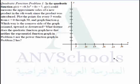Quadratic Function Problem 1: In the quadratic function Q of X is equal to negative 0.3 X squared plus 8X plus 7, Q of X could measure the approximate sales of a new product in the X week since the product was introduced. Plot the point for every 5 weeks from X equals 0 through 30 and graph function Q. Which way is the concave side of the graph oriented, upward or downward? What feature does the quadratic function graph have that neither the exponential function graph in problem 1 nor the power function graph in problem 2 has?